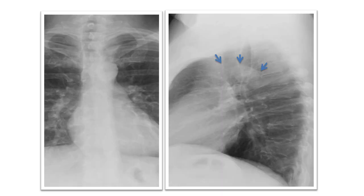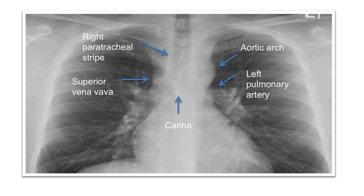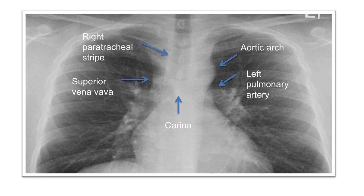The aortic arch can also be seen on the lateral x-ray as a white arch coursing from front to back. Because of its shape and gray scale, the trachea can be easily identified on the chest x-ray. We can now use the trachea as a landmark to learn about and to identify other anatomical structures such as the carina, the superior vena cava, the right paratracheal stripe, the aortic arch, and the left pulmonary artery — all anatomical structures that we will be discussing in future videos.